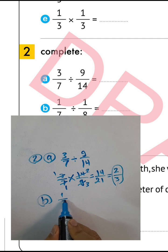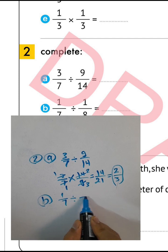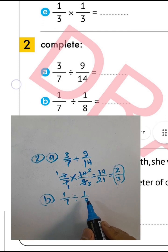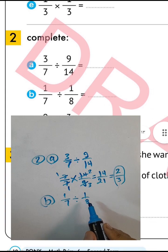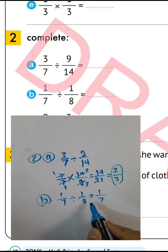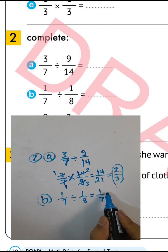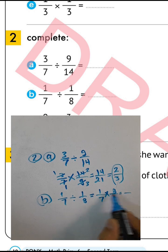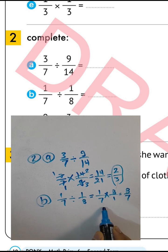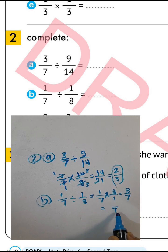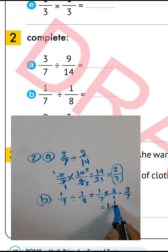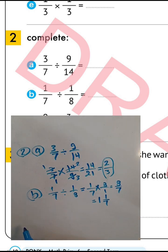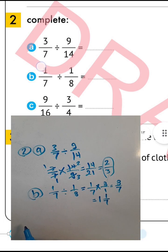Letter B: one over seven divided by one over eight. Write one over seven, convert and write eight over one. One times eight equals eight, one times seven equals seven. Eight divided by seven equals one remainder one. The result is one and one over seven.